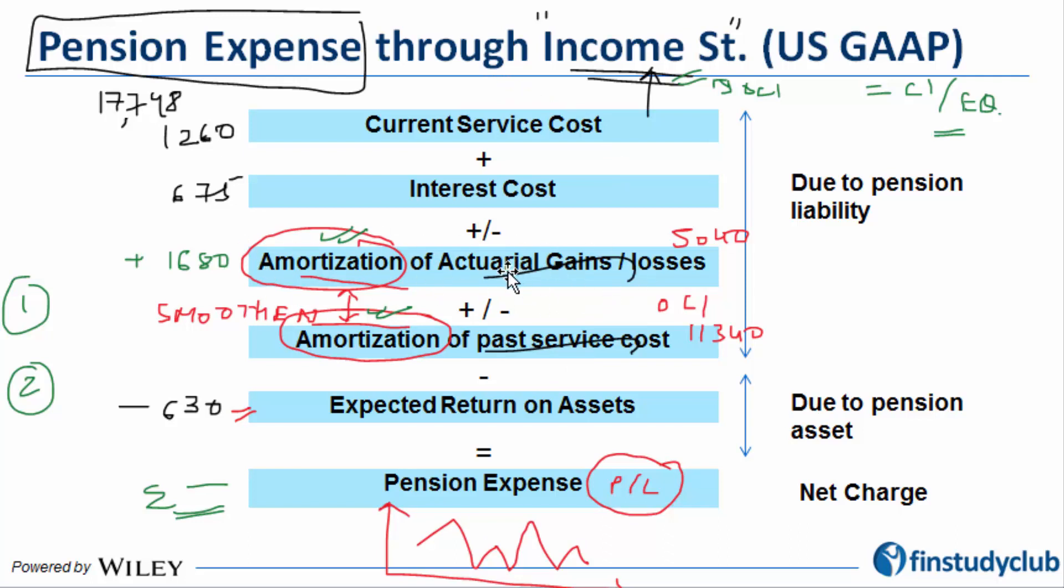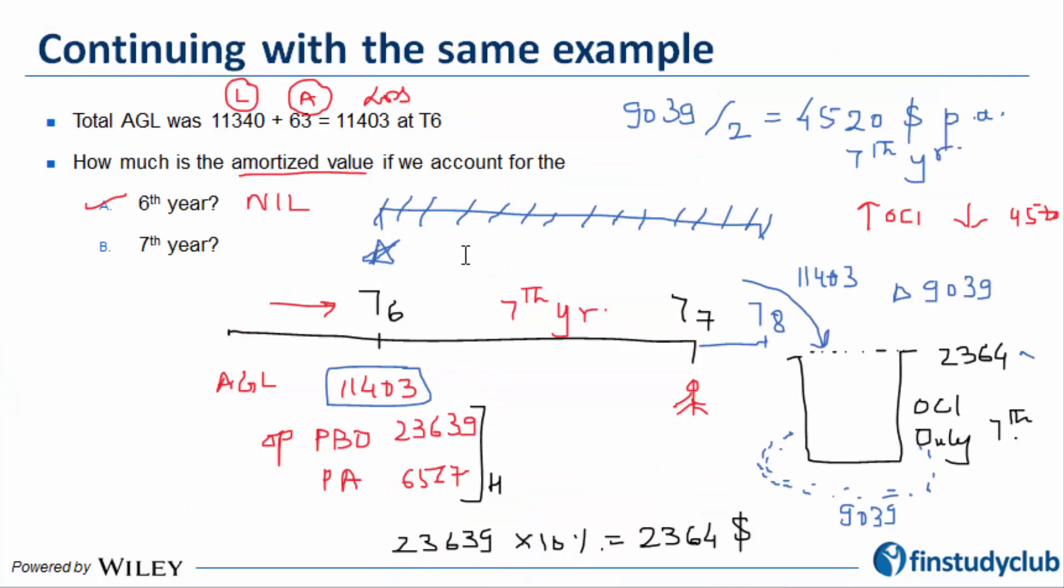To answer the impact on the seventh year's P&L, there is an added expense of 4,520 that will enter the P&L. What is the impact on total asset? Nil. Total equity? Nil. Total liability? Nil. This is because there is a movement only between P&L and OCI.